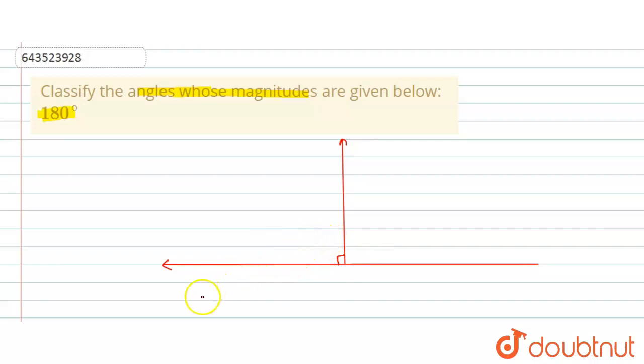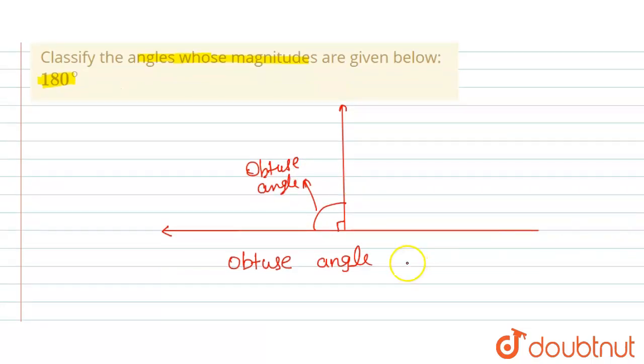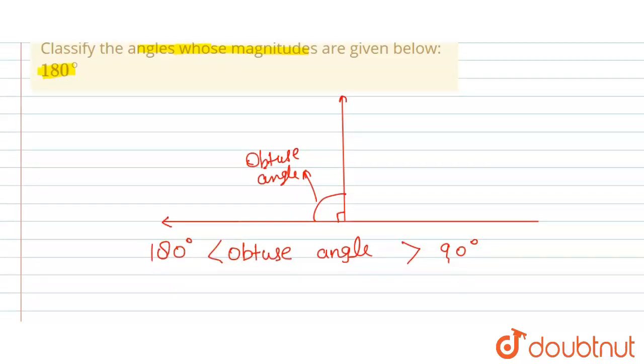Obtuse angle. This form of obtuse angle. The range of obtuse angle is greater than 90 degrees and less than 180 degrees, or less than 180 degrees.